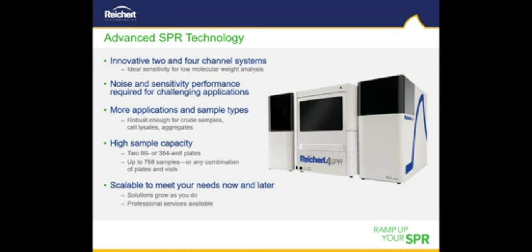Reichert has two main SPR platforms: a two-channel and a four-channel system. Both systems implement high-quality optics and advanced electronics that result in high sensitivity to carry out demanding applications like small molecule analysis. The systems also implement a robust fluidics platform that can accommodate different sample compositions including crude samples like whole cells, lysates, and serum. The systems also have a high sample capacity accommodating up to 768 samples for higher throughput demands.